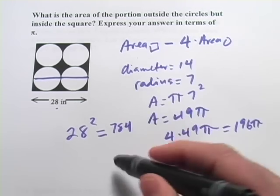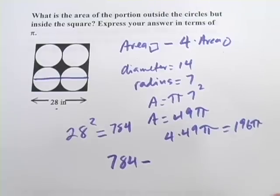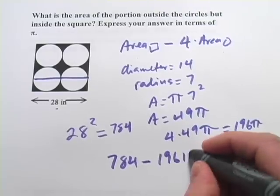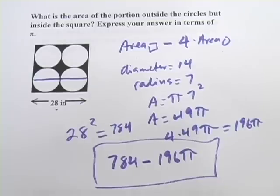So we wanted the area of the square, 784, minus the area of four of those circles, which is 196 pi. And when we're expressing this in terms of pi, that's all the farther we have to go. That's a perfectly appropriate answer.